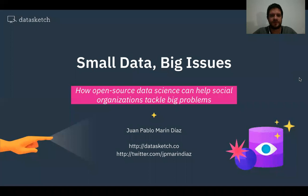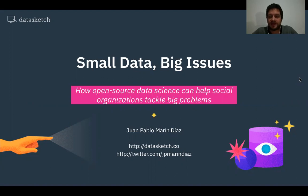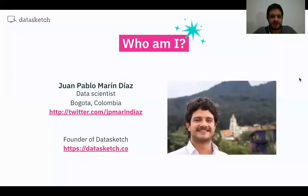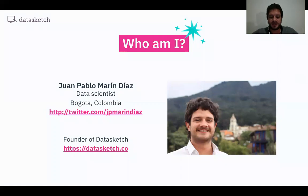Hello. Welcome to my talk. We're going to be speaking about small data and big issues, and how open source technologies can help social organizations tackle big problems. My name is Juan Pablo Marin Diaz. I'm from Colombia. I'm a data scientist and founder of DataSketch, an organization that uses data science to empower social organizations to do social good using data.